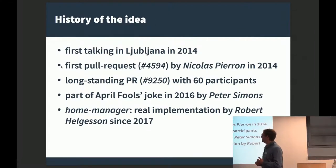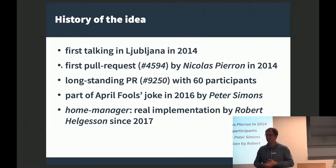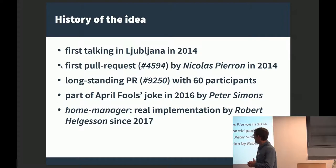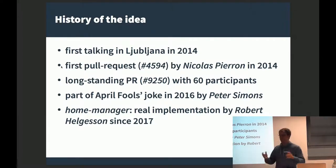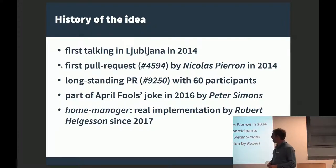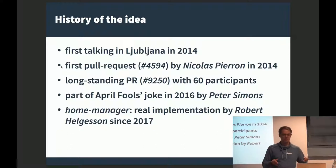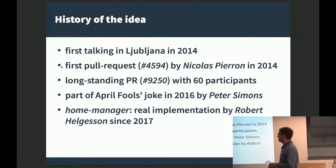So we have a central configuration file where we write down which packages we want to have installed, which services should be running, and which files we want to have linked into our home directory. Then a set of tools to instantiate this user profile. The idea is rather old — I remember people talking about it back in 2014. Nicolas then implemented the first idea, and then I opened this long-standing pull request, which by now has 150 comments and 60 participants. Last year it already had enough attention so that Peter had to mention it in his April Fool's joke.